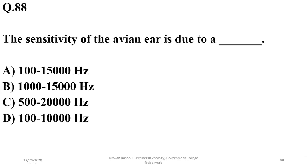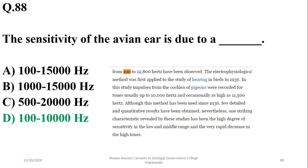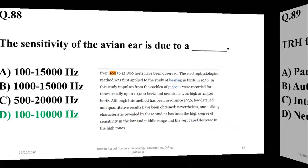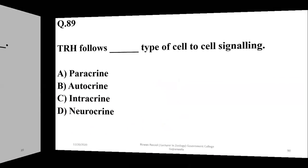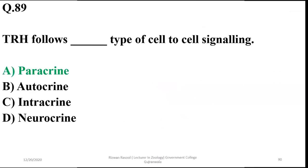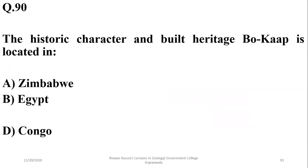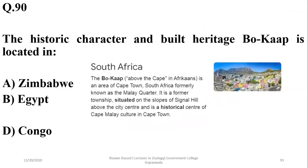Question 87: The sensitivity range of the avian ear is recorded as 100 to 10,000 hertz — sometimes exceeded but that is the general range. Question 88: TRS follows paracrine type of cell signaling.